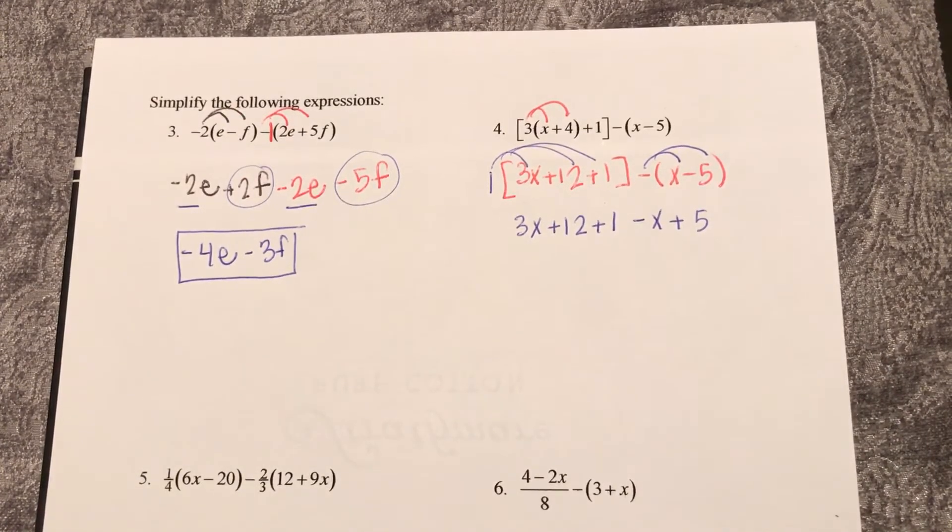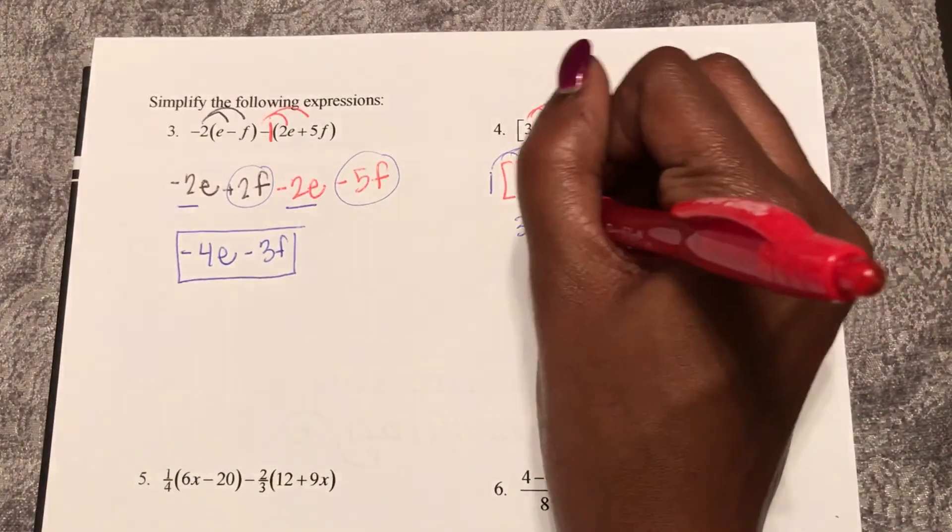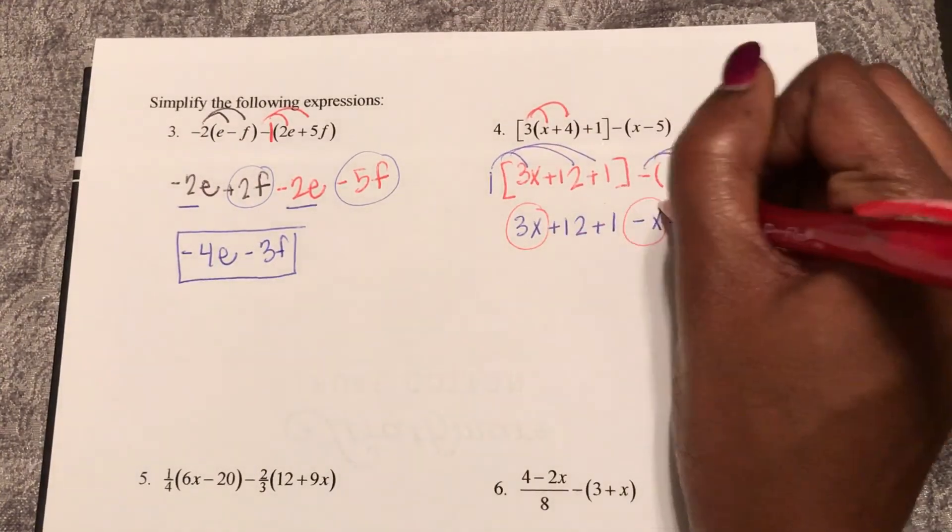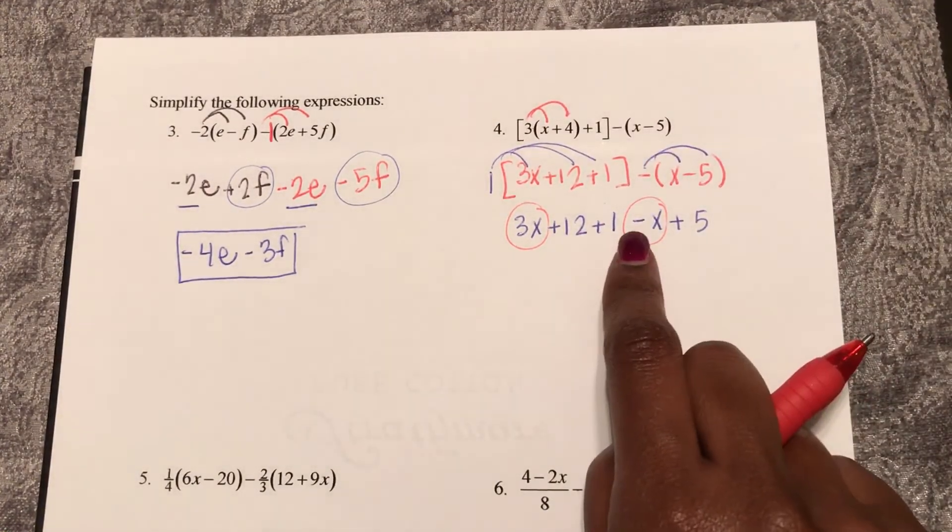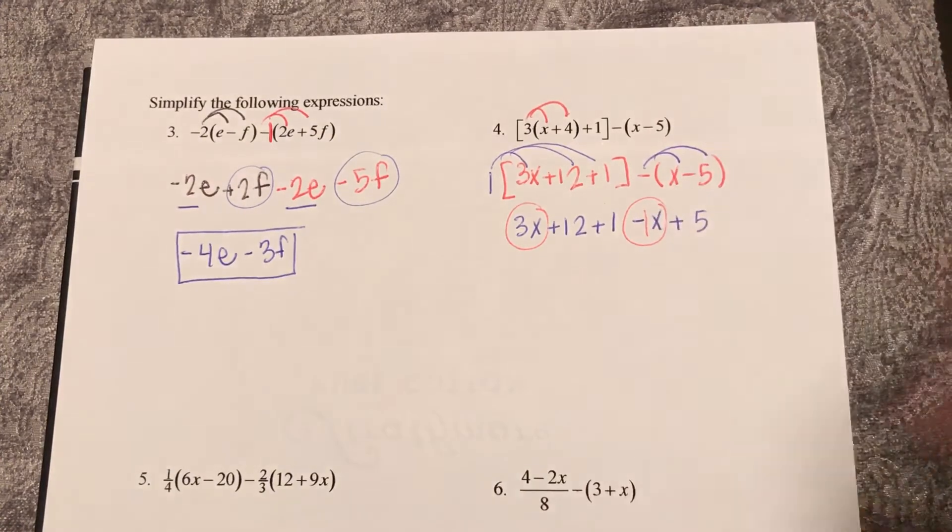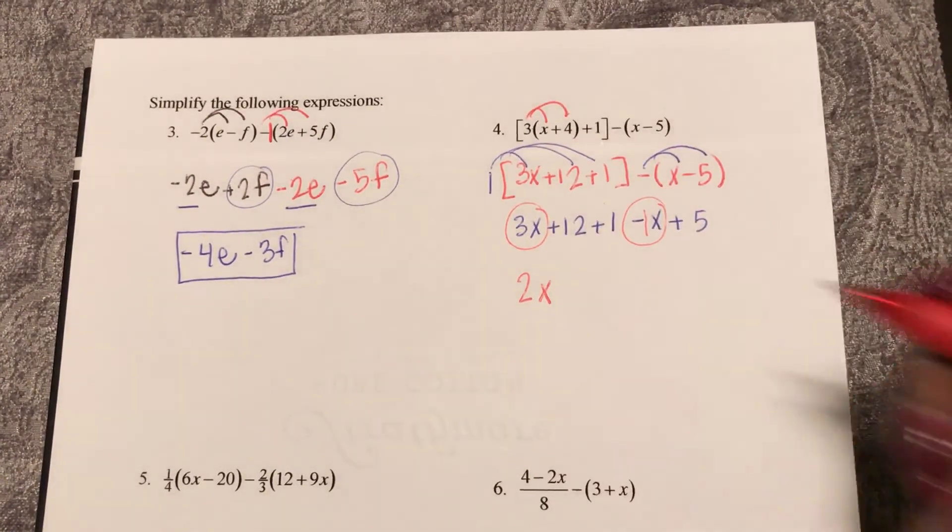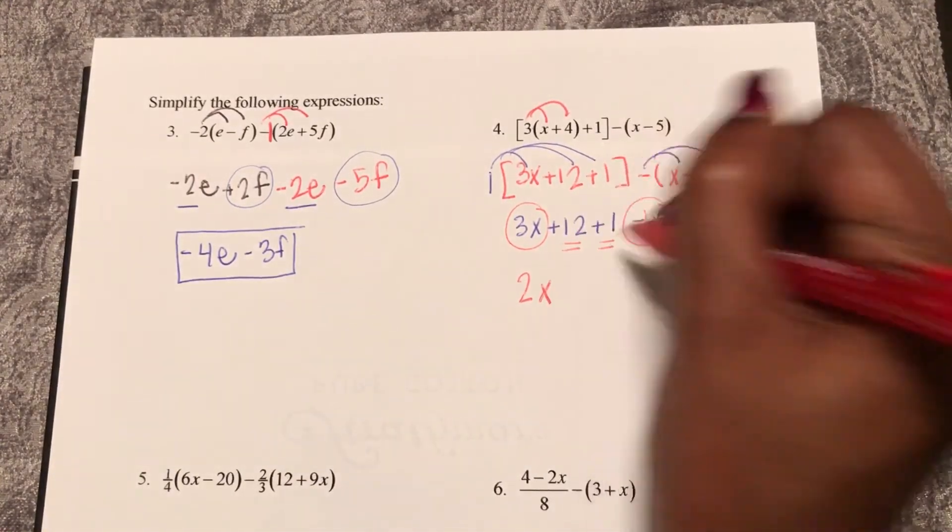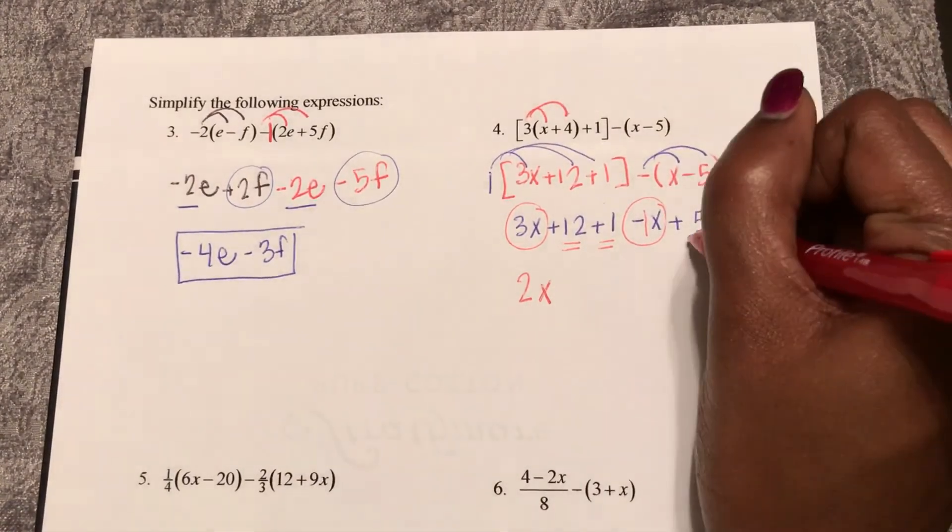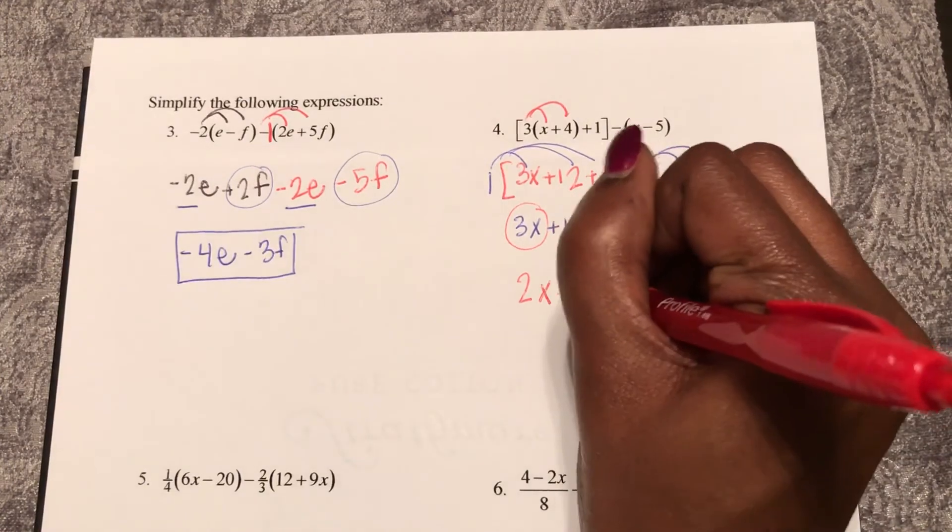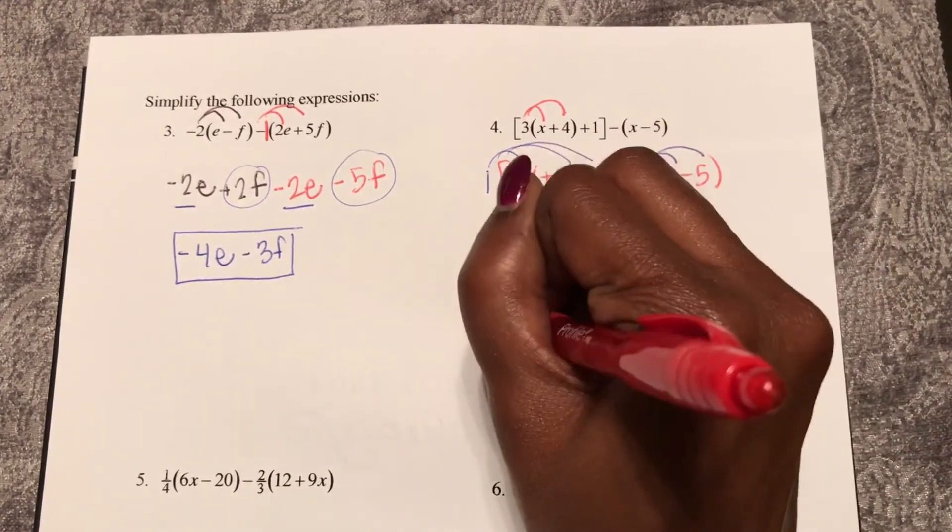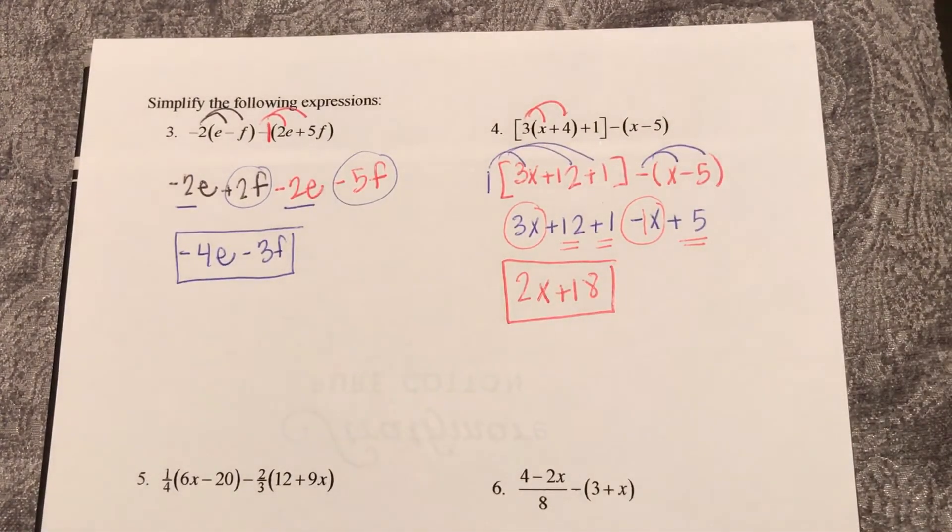So now my last step is to combine like terms. 3x and negative x. Remember that negative x, the coefficient is really a negative 1. 3 minus 1 makes 2x, and then 12 plus 1 is 13, plus 5 is 18. So now I have simplified that down into a much easier expression to look at.